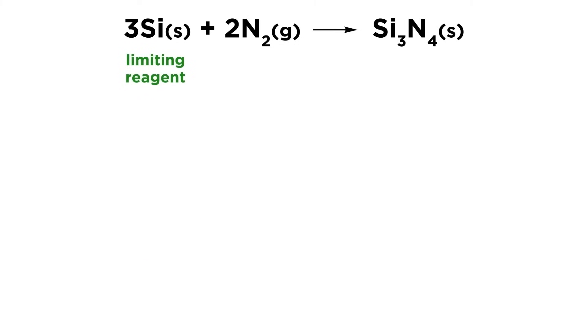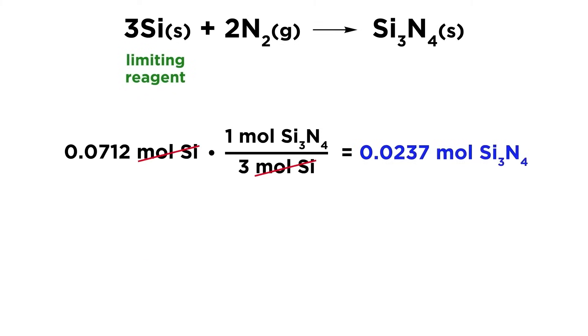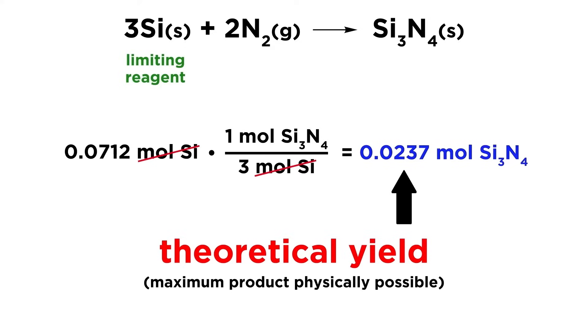Now that we understand how to determine the limiting reagent, let's mention a few more things. Let's use the calculation we just performed involving the moles of limiting reagent, and the moles of product we can therefore expect. This is called the theoretical yield. This is the amount of product we can expect if the limiting reagent reacts completely, meaning that every single reactant particle is converted flawlessly into product. In other words, this is the greatest amount of product that is physically possible for this reaction, given the amounts of these reactants.